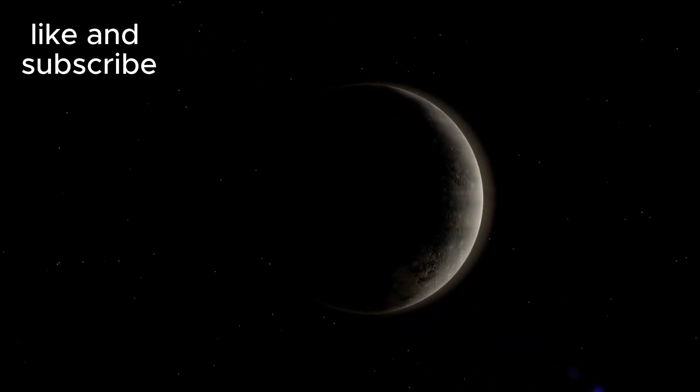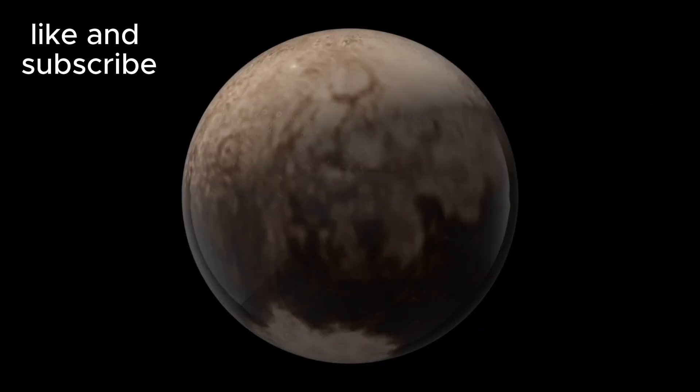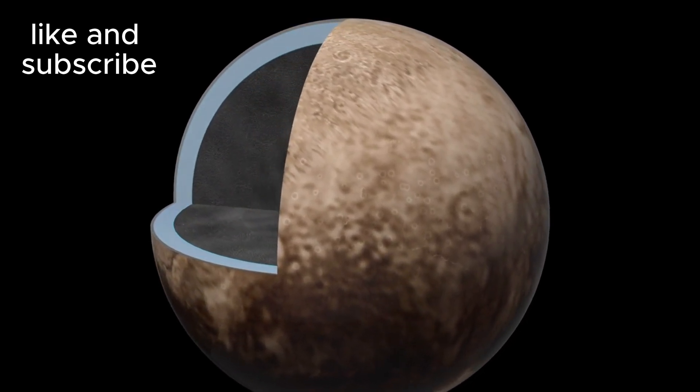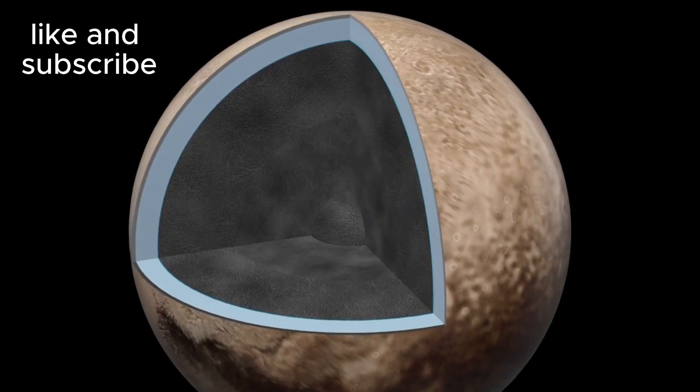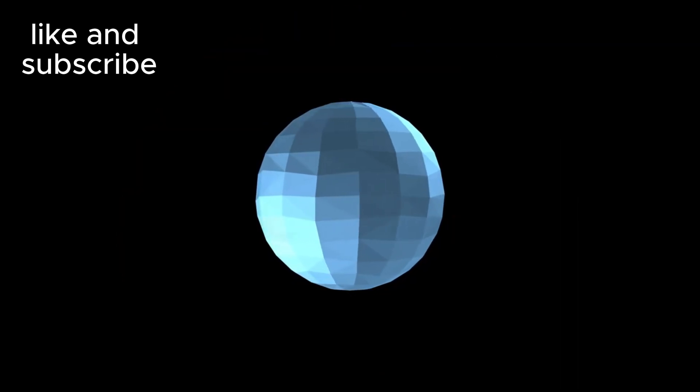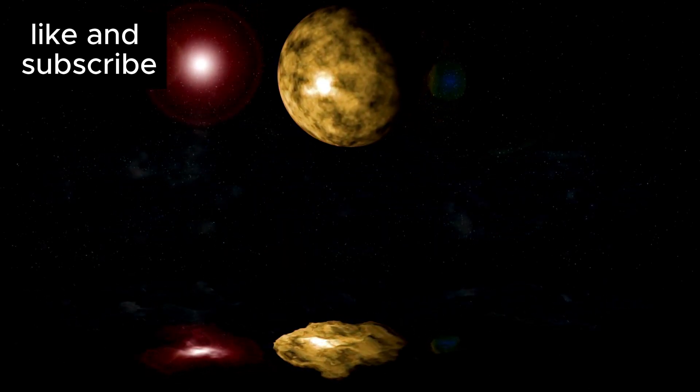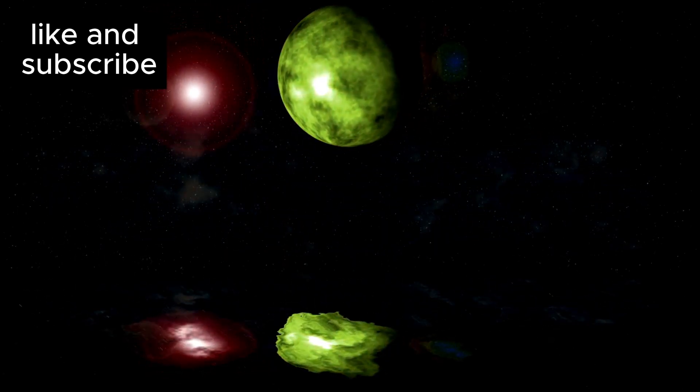So, what's driving this strange activity on Pluto? Scientists speculate that Pluto's core could be radioactive, slowly breaking down and releasing heat over time. This could be just enough to keep the subsurface ocean from freezing solid, even though Pluto is far beyond the traditional habitable zone of our solar system. And this brings us to the big question: could there be life in Pluto's ocean?